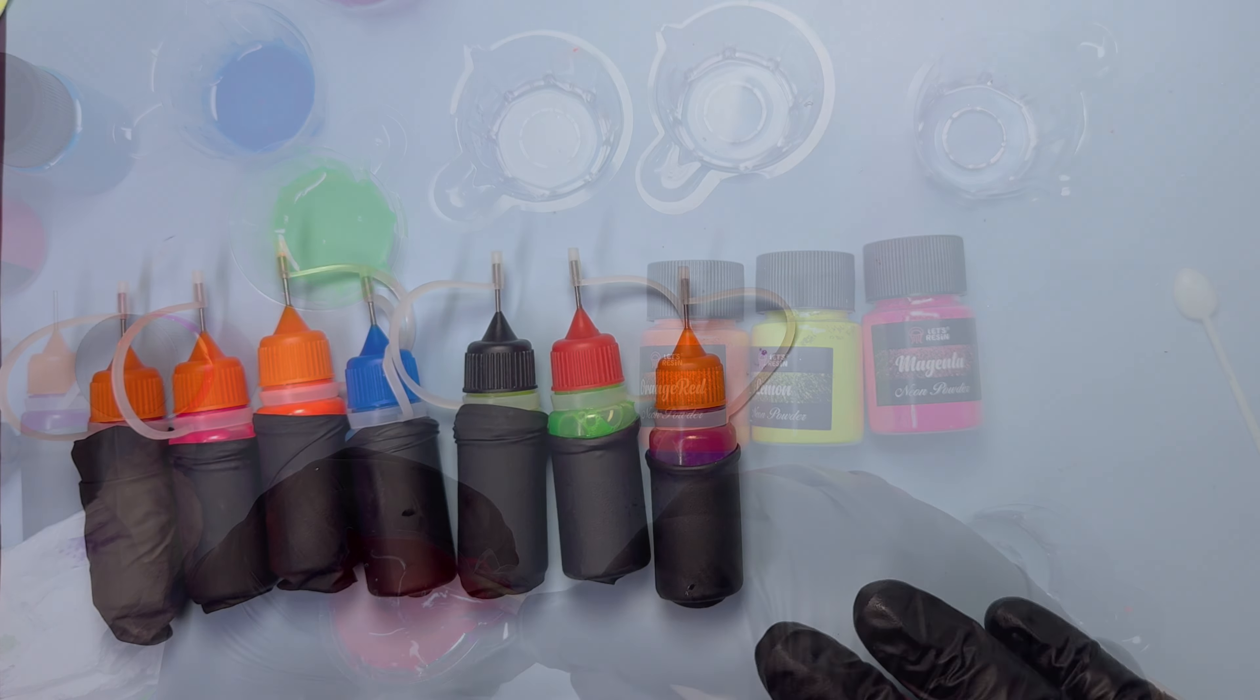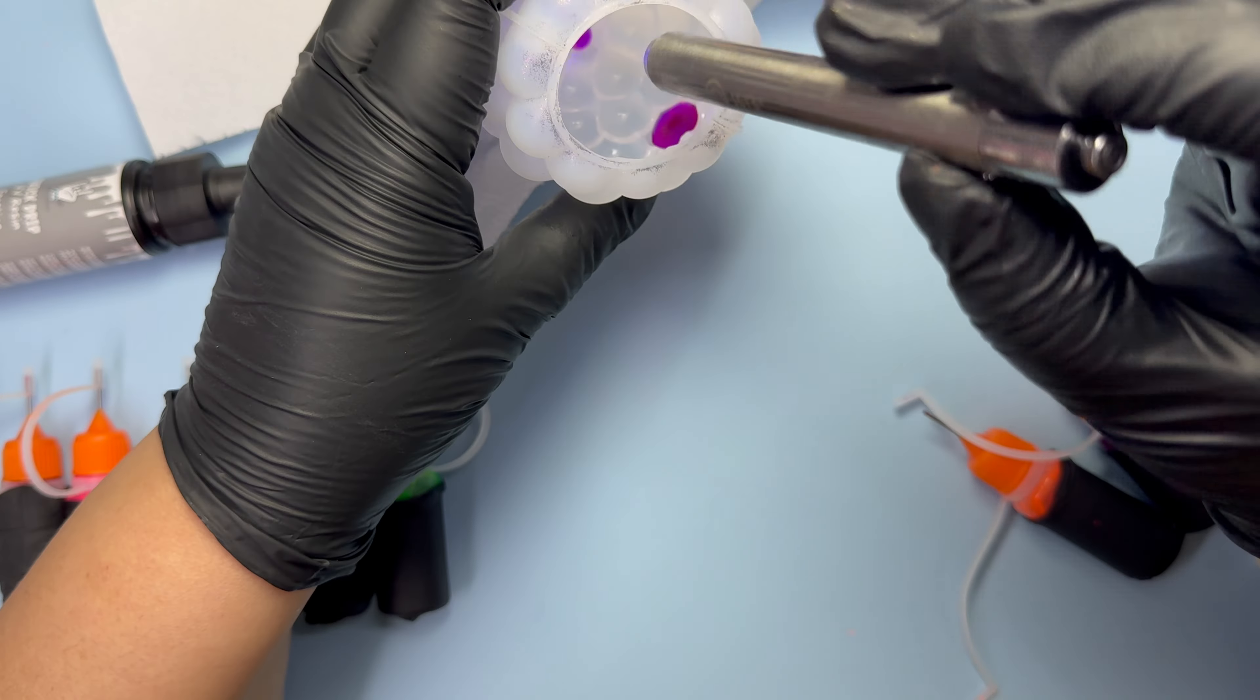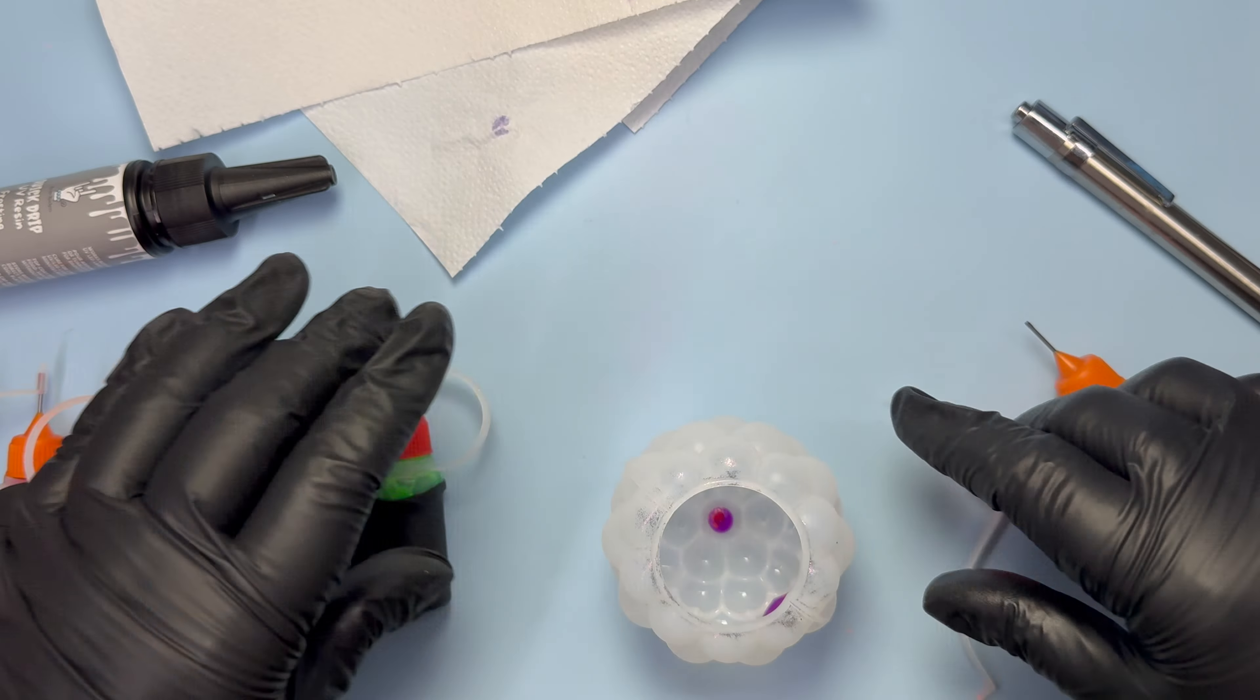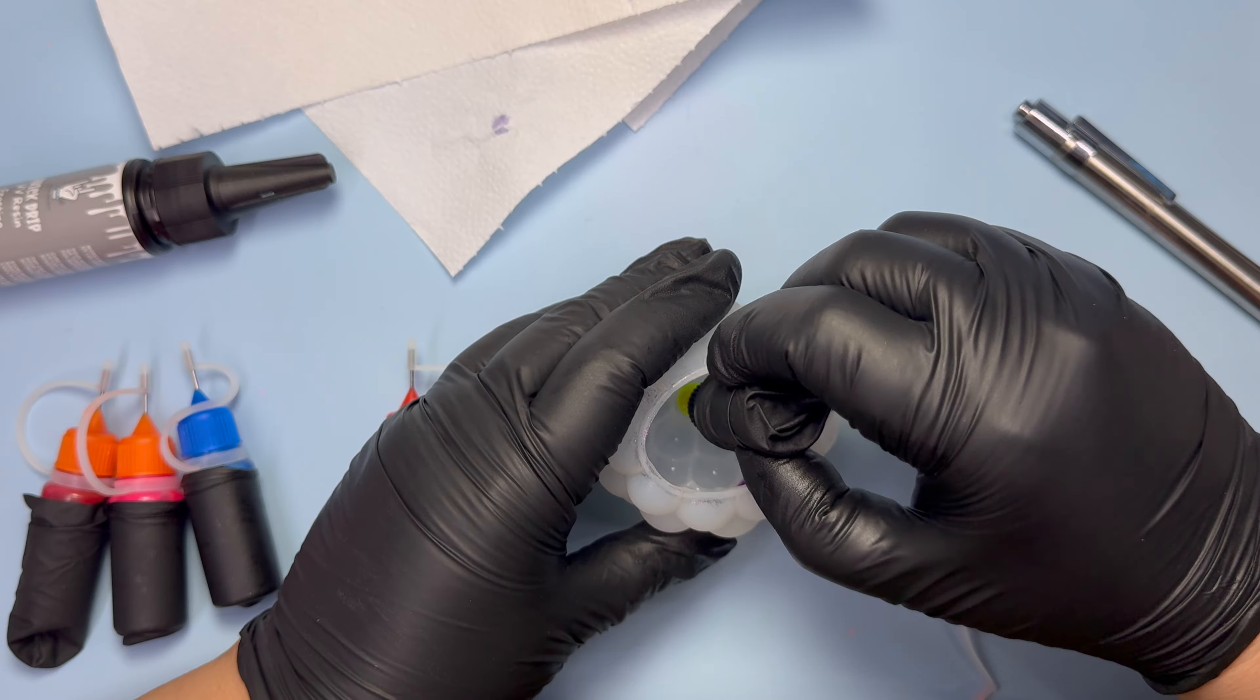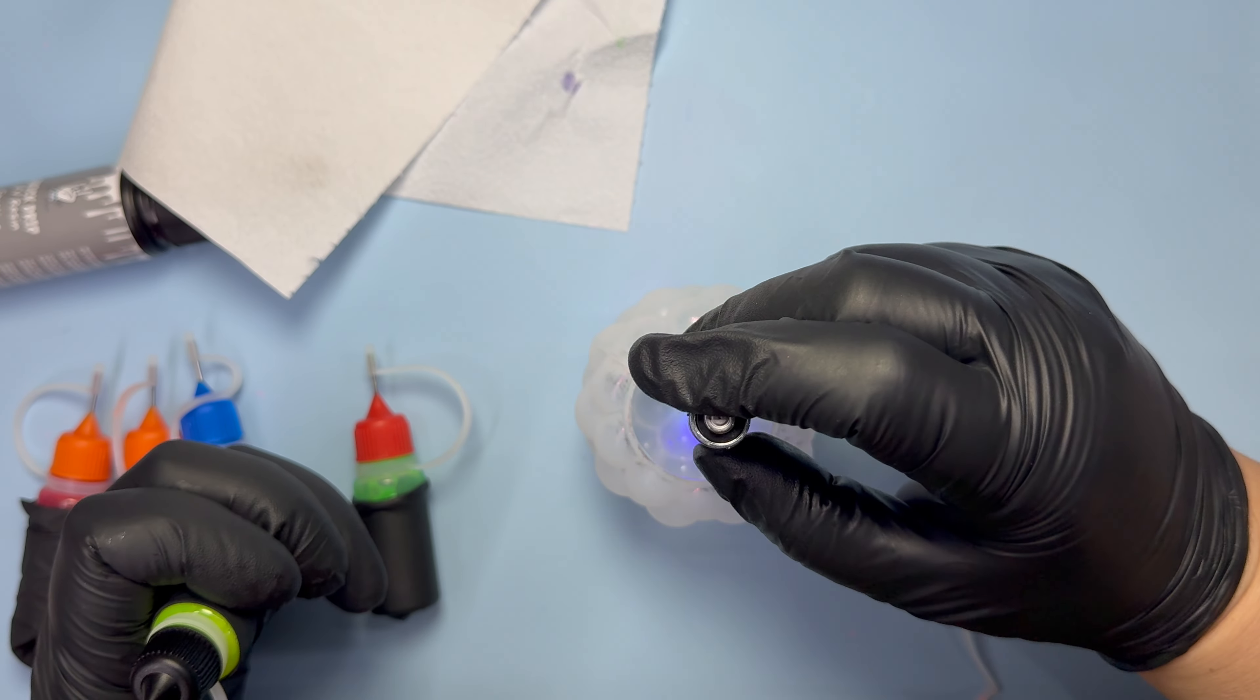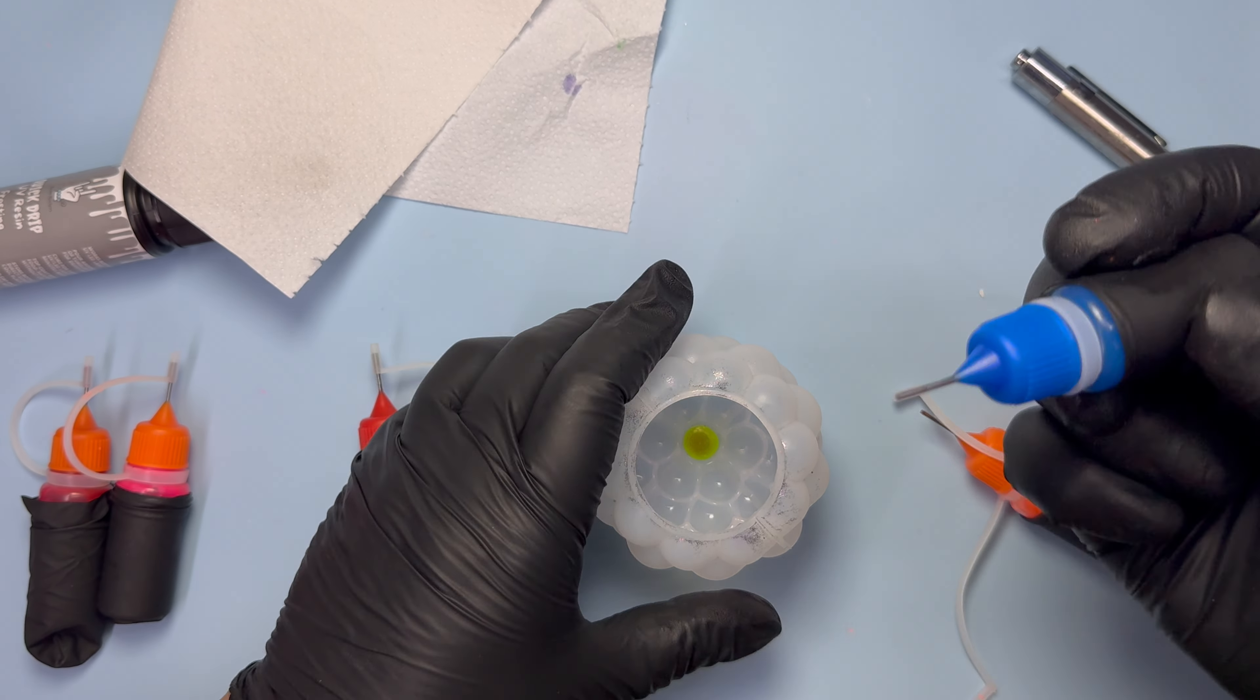I will also be using this UV white from Resin Rockers. I'm placing a dab of color into the socket and using my UV torch to cure it before placing another color on top. I want to have about three different color layers in each one. Make sure you cure each layer before adding your next color.